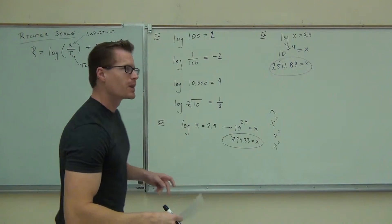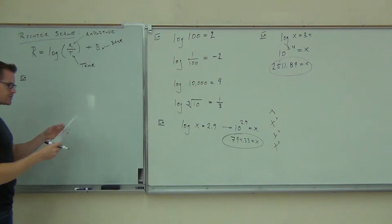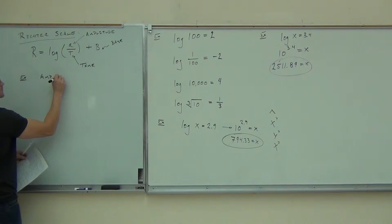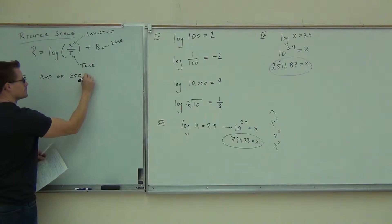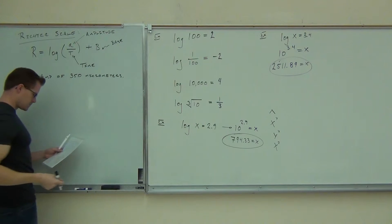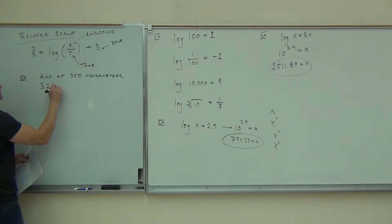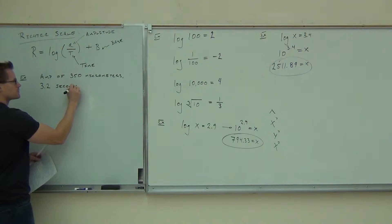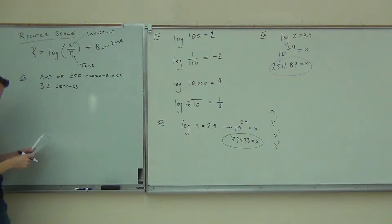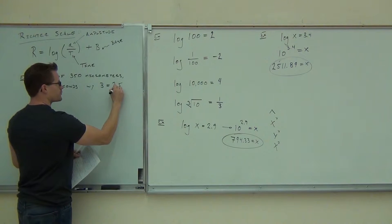Anyway, this is some sort of a base that's not going to change for us. It'll be given to you. All these numbers are going to be given to you. So let's go ahead and see if we can calculate the Richter scale for an amplitude of 350 micrometers where there are 3.2 seconds between the waves with B equal to 2.5.